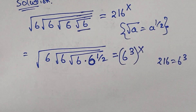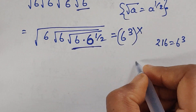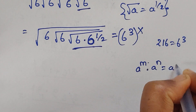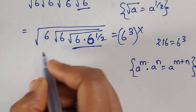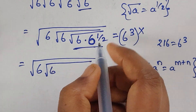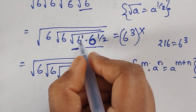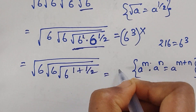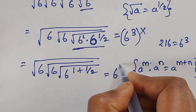Now we can use this formula: a to the power of m times a to the power of n equals a to the power of m plus n. Using this formula, we combine the square roots of 6. So we get 6 to the power of 1 plus 1 by 2, and on the right side we have 6^3 to the power of x, giving us 3x.